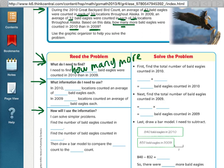In 2010, 20 locations counted an average of 42 bald eagles. And in 2009, 26 locations counted an average of 32 bald eagles. All that came from up here, what I underlined.